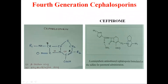In this diagram you can see the structure of Cefpirome. Cefpirome has an extra ammonium group. Because of this extra ammonium group present in the 4th generation cephalosporin, it allows them to rapidly penetrate through the outer membrane of gram-negative bacteria, which enhances their activity against gram-negative organisms.